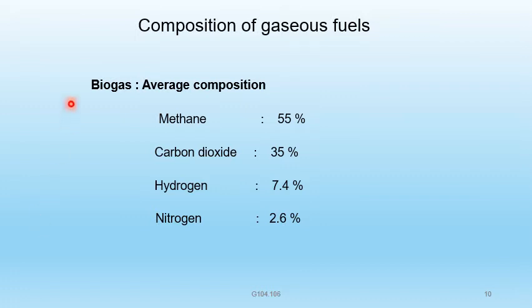Next, biogas. Gobar gas is an example of biogas, generally used in villages. Biogas is produced by fermentation of cow dung by bacterial action in the absence of oxygen, or by the degradation of any organic waste by bacterial action in the absence of oxygen.